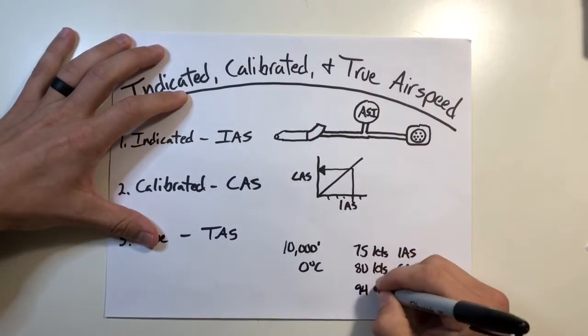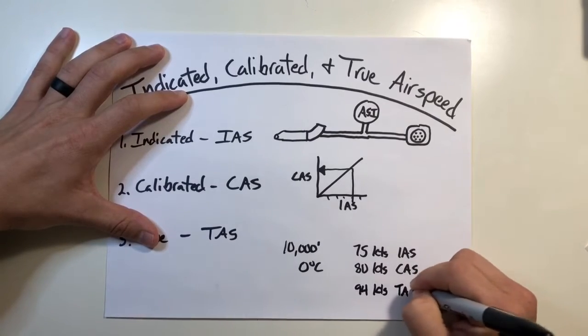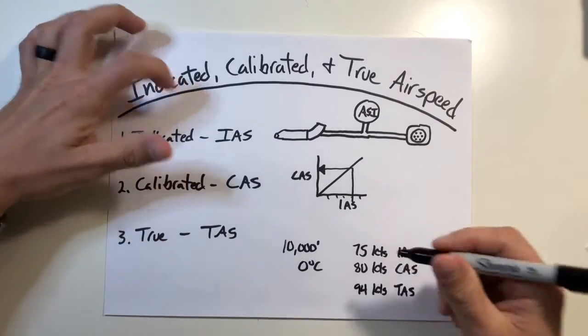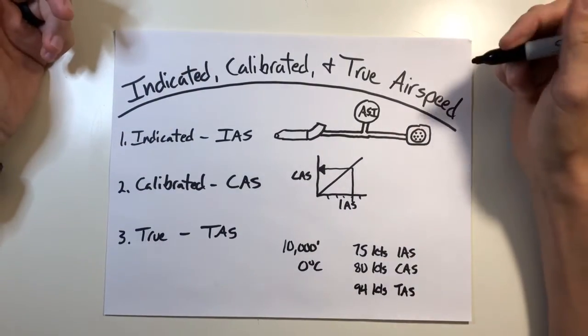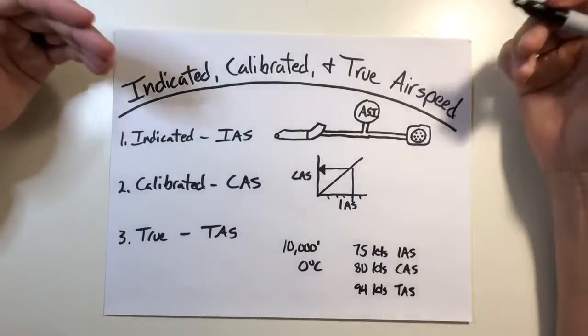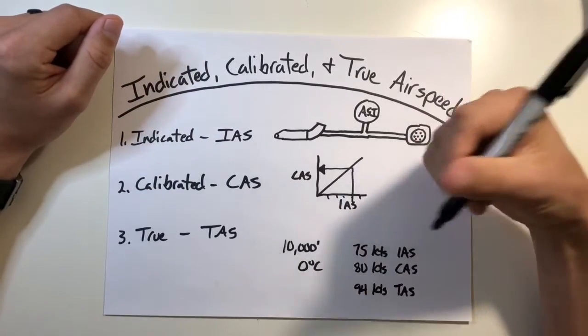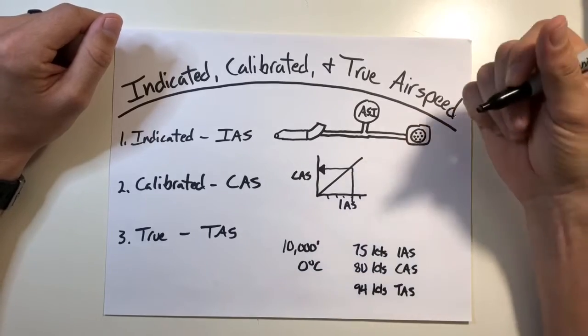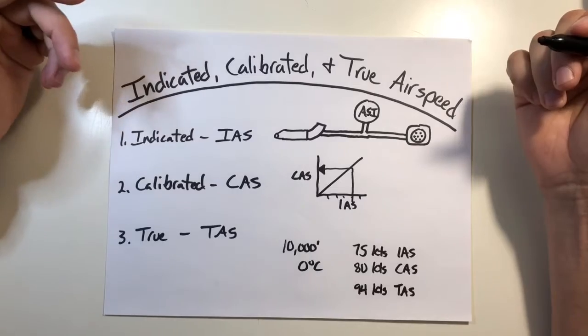So despite my gauge telling me I'm going 75 knots, I'm in all actuality going 94 knots. This is a 19 point difference from your indicated airspeed, a pretty significant difference, especially if you're trying to navigate based on time, distance, and heading. Now the reason for this drastic difference is because the air is thinner and the dynamic pressure is less for the same speed when you get into these higher altitudes.